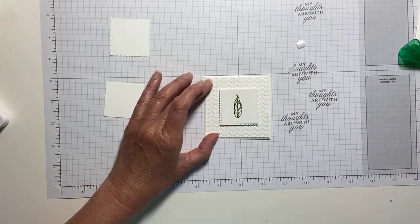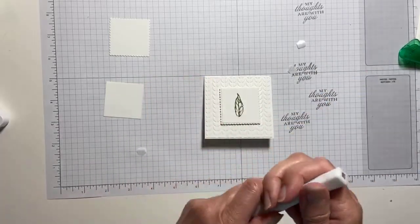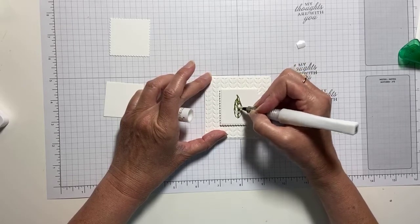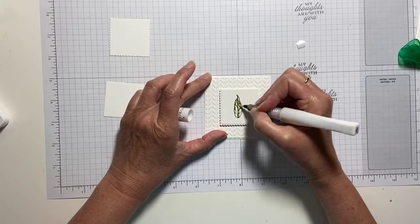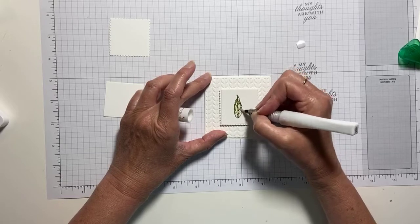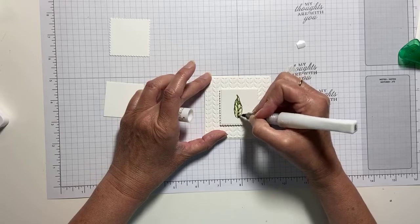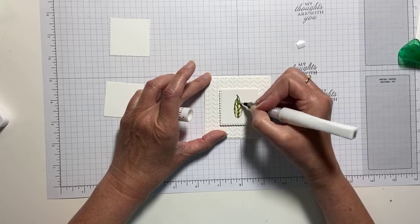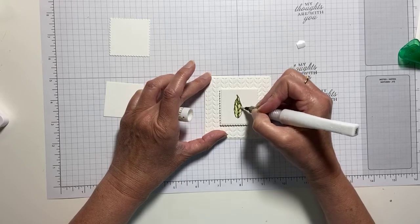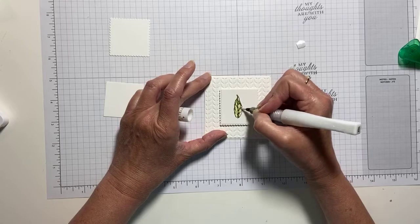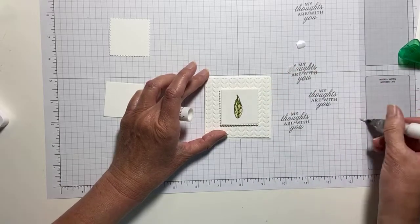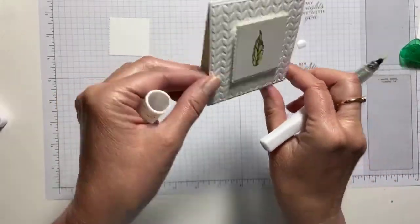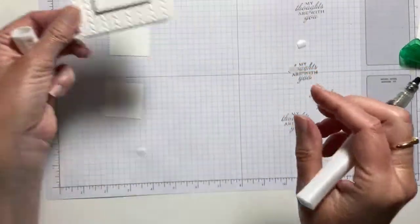And then I'm going to take my Wink of Stella. And I'm going to color and pull in some of that green. Like so. And I'm not going to stamp anything on the inside because I don't know what I want this to say. So little note cards just might come in handy. And you can clean that off on your grid paper. Those little note cards just might come in handy. That could be thank you. That could be sympathy. That could be anything.